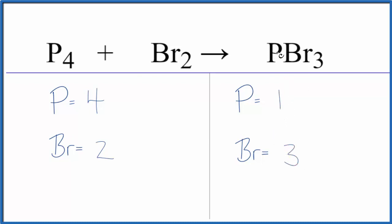Why don't we put a four in front of the PBr3? That'll accomplish two things. First, one times four, that balances the phosphorous atoms. We have four on both sides.